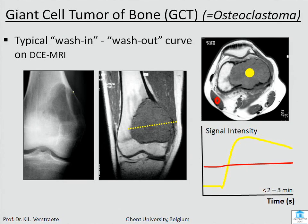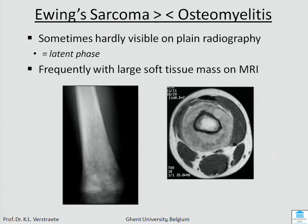When you have an adult with a lytic lesion in an epiphysis or metaphysis, you have a giant cell tumor of bone. On dynamic contrast enhanced MRI this type of tumor has a very fast wash-in followed by early wash-out. Then we have Ewing sarcoma, which is a permeative lesion — you can hardly see it, but you see a little periosteal reaction. On MRI you will see the tumor, which often has a large and thick soft tissue component — typical for Ewing sarcoma.